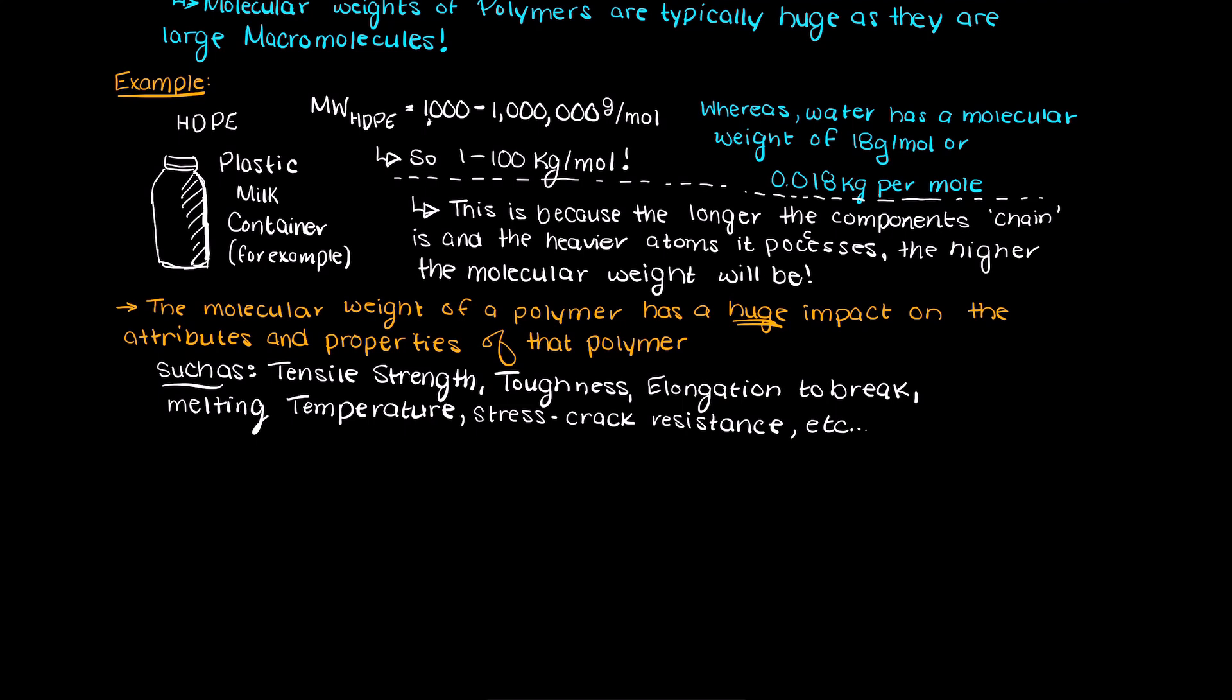So, a higher molecular weight polymer will be better at absorbing impacts when it is a solid, and much more viscous as a liquid, whereas a lower molecular weight polymer will tend to be more stretchy and flexible in general, but much weaker.